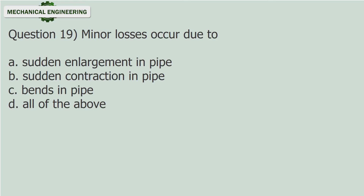Question 19. Minor losses occur due to: A. Sudden enlargement in pipe, B. Sudden contraction in pipe, C. Bends in pipe, D. All of the above. Answer: All of the above.